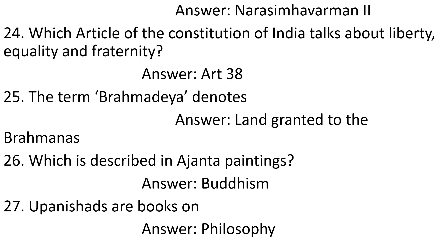Question 23: The shore temple of Mamallapuram was built by. Answer: Narasimhavarman II. Question 24: Which article of the Constitution of India talks about liberty, equality, and fraternity? Answer: Article 38. Question 25: The term Brahmadeya denotes. Answer: Land granted to the Brahmanas. Question 26: What is described in Ajanta paintings? Answer: Buddhism.